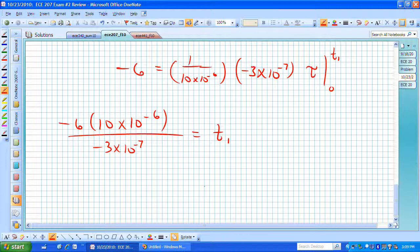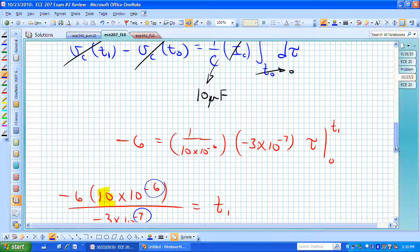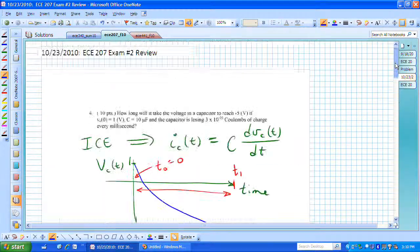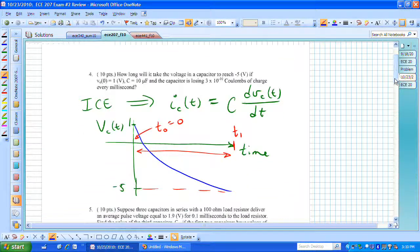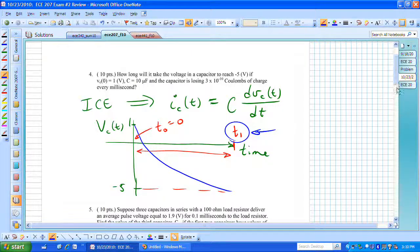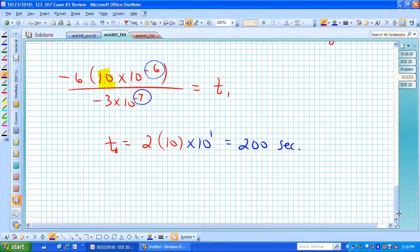And we are left then with t1 is now equal to 2, and we now have this 10 from this location. And if we just deal with our exponents, we now have minus 6 minus a minus 7 or times 10 to the 1. And that gives us then 200 seconds for our time that it's going to take us to transition between a voltage starting at 1 volt and going to minus 5 volts. We now have figured out what t1 is actually equal to, and that t1 is equal to 200 seconds.